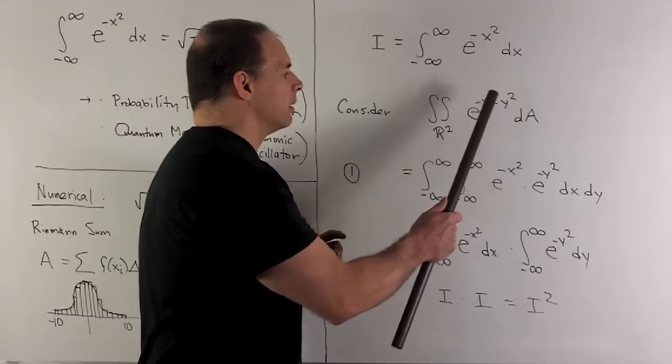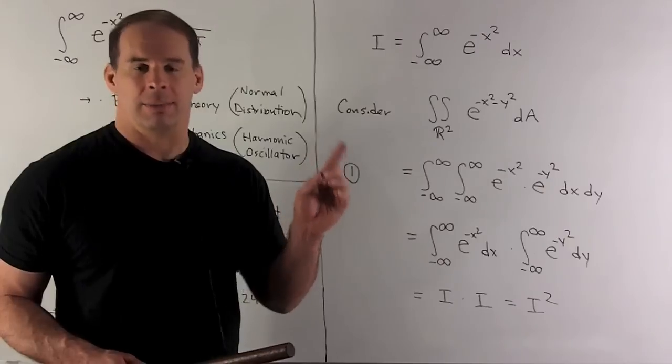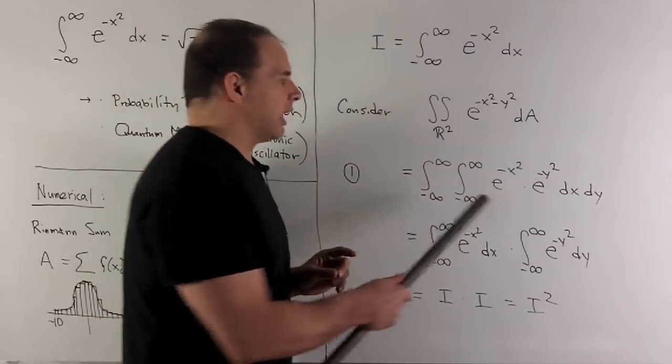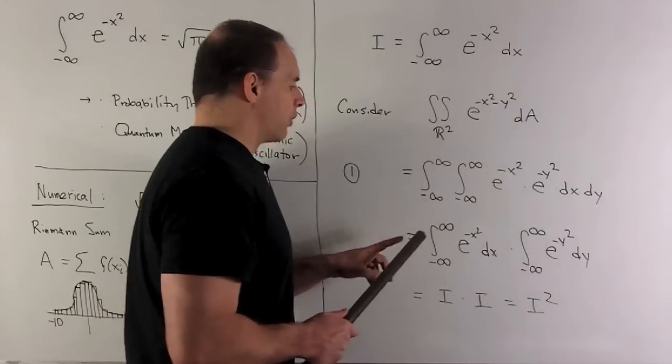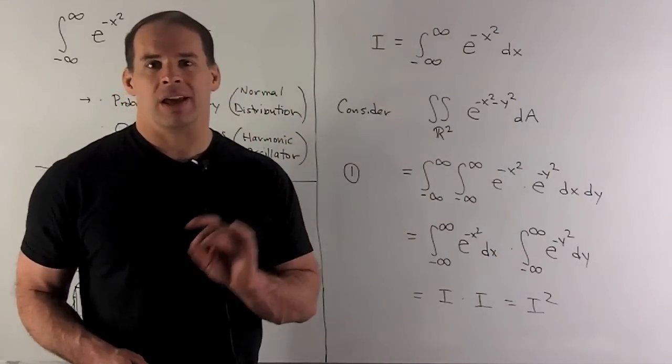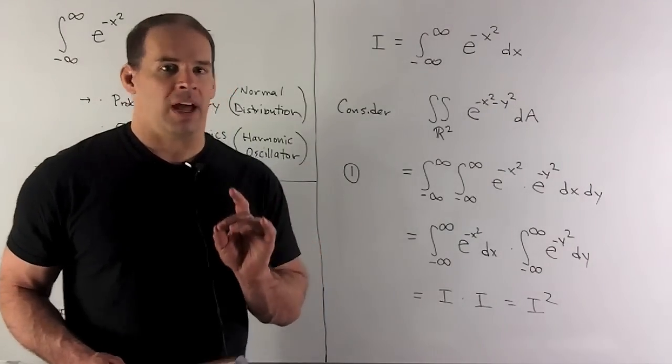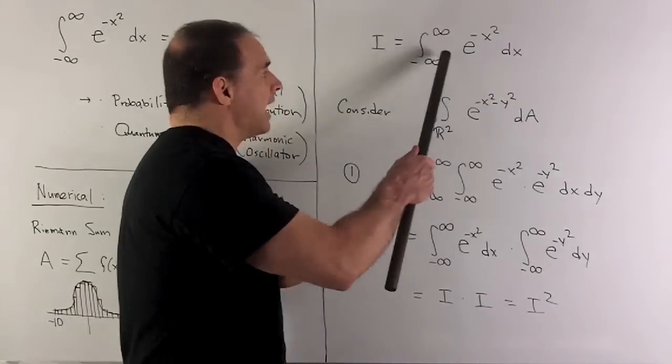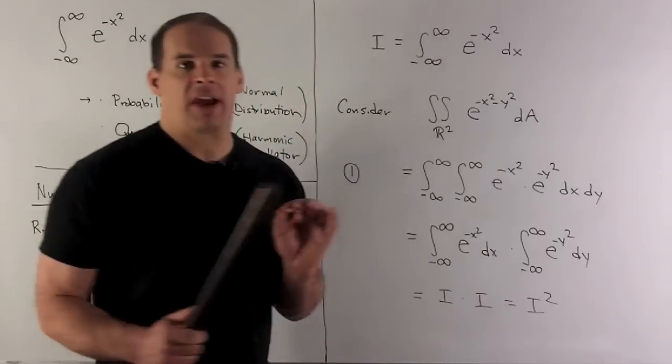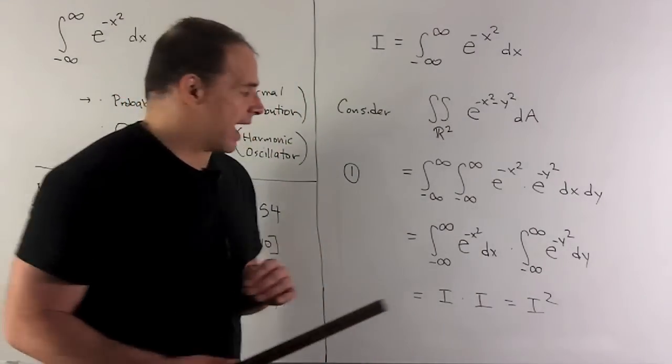First computation of the integral over the plane: take e^(-x² - y²) and break it up into a product of two exponentials. I collect the x terms, collect the y terms, and write this as two definite integrals. My first integral is I, our second integral is also I since it's just a dummy variable. So I have I times I, which gives me I².